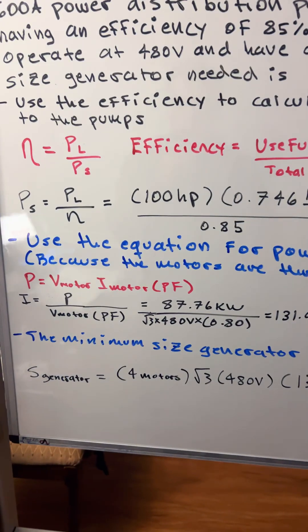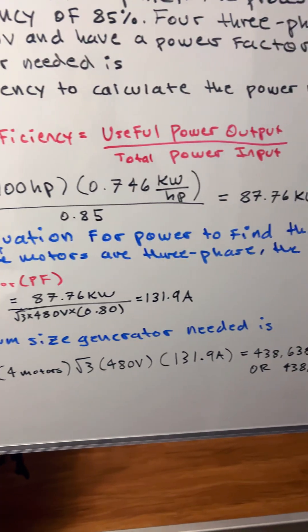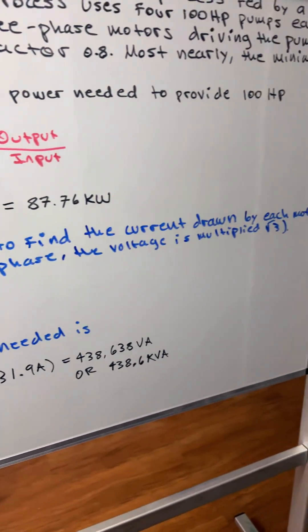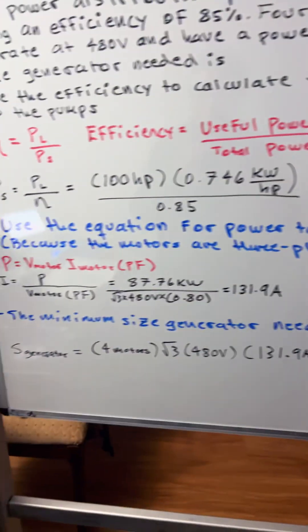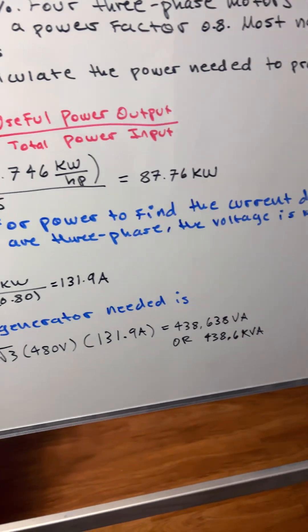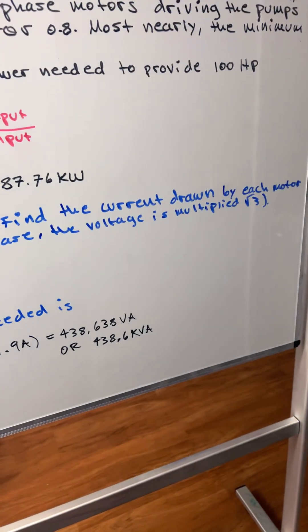The second step is to use the equation for power to find the current drawn by each motor. Because the motors are three-phase, the voltage is multiplied by the square root of three.